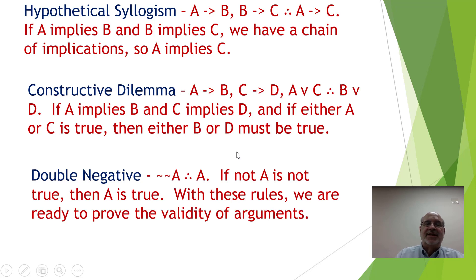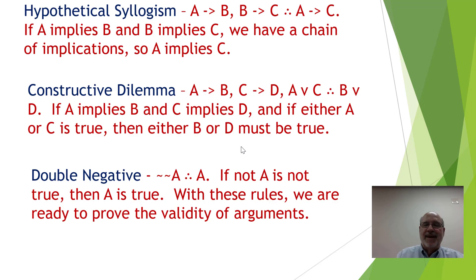Finally we have what is known as double negation: not not A. If it is not true that A is not true, then A has to be true. With these rules we are ready to prove the validity of many different kinds of arguments.